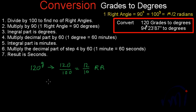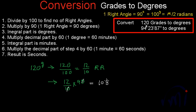We want to convert 120 grades into degrees, so this will be equal to 12 by 10 multiplied by 90. The zero cancels, and 12 multiplied by 9 is 108. So 120 grades is equal to 108 degrees. Our procedure ends here when we don't have any minutes or seconds in the grades. This is the result of the first conversion.